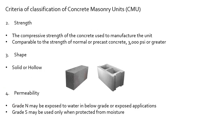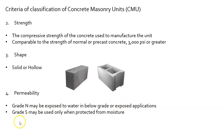Compressive strength is described as the compressive strength of the concrete used to manufacture the unit — comparable to normal or precast concrete at about 3,000 PSI or greater. We also describe the shape as solid or hollow, and the permeability: Grade N can be exposed to water in a below-grade application, while Grade S is used when protected from moisture.